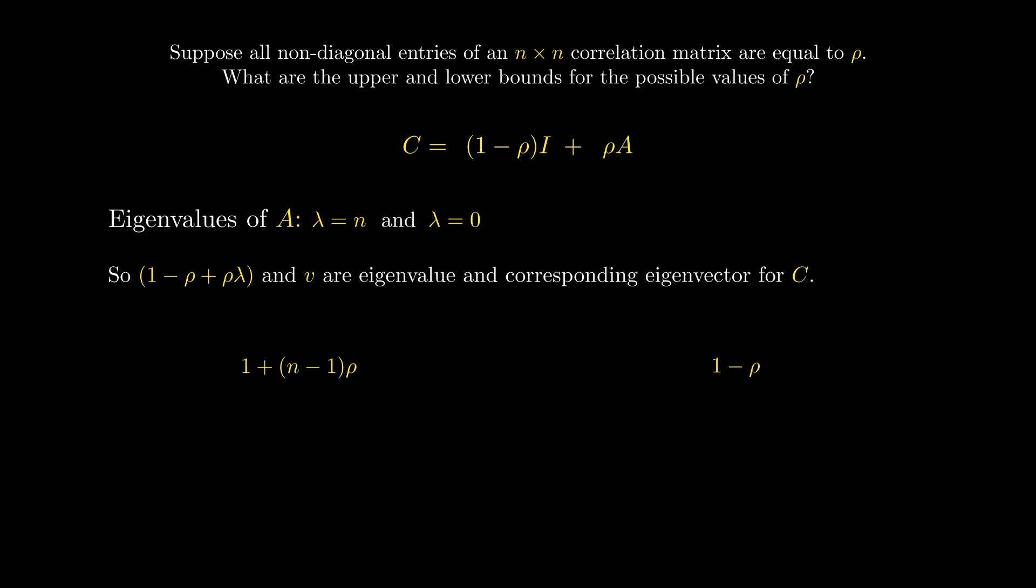Now, remember that since we want C to be positive semi-definite, both these eigenvalues have to be greater than or equal to 0. Rearranging these expressions gives us that rho is greater than or equal to negative 1 over n minus 1 and less than or equal to 1.